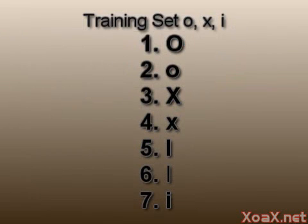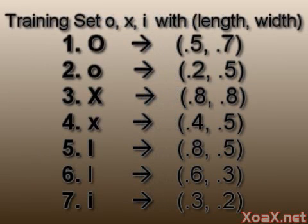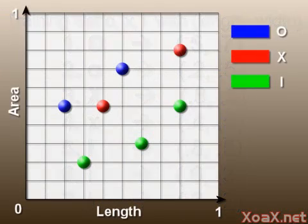Here we have a set of seven letters to train on. Our input parameters will be the length and area of the characters, and will be scaled to fit in the intervals 0 to 1. I just made up these parameters for illustration, so don't take them too seriously.